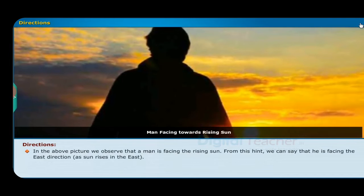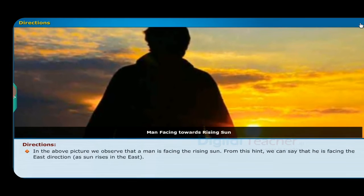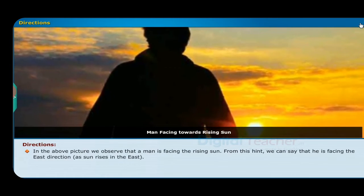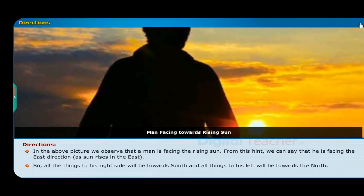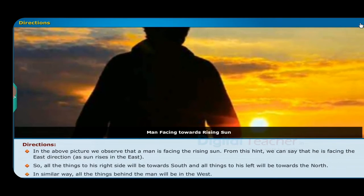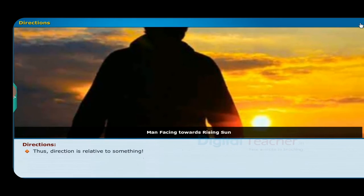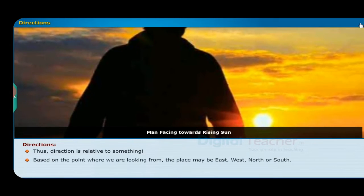In the picture, we observe that a man is facing the rising sun. From this hint we can say that he is facing the east direction, as the sun rises in the east. So all things to his right side will be towards south, and all things to his left will be towards north. Similarly, all things behind the man will be in the west. Thus, direction is related to something. Based on the point where we are looking from, a place may be east, west, north, or south.